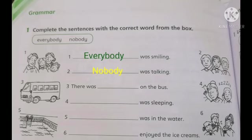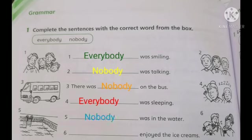Number three: was there anyone on the bus? Nobody was on the bus — there was nobody on the bus, meaning no one at all was riding the bus. Number four: look at the picture — everybody was sleeping, all the people in the picture were sleeping. Number five: nobody was in the water — not a single person was inside the water. Number six: everybody enjoyed the ice cream — they were all enjoying the ice cream.